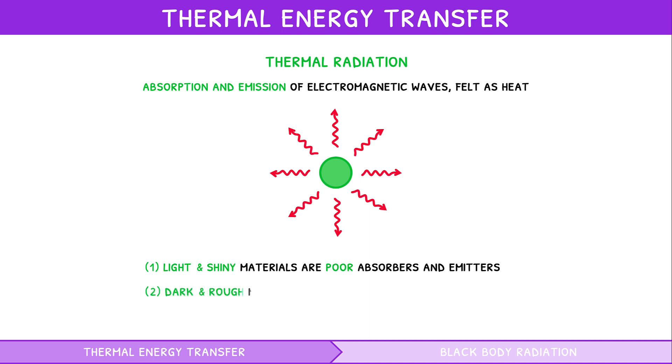Dark and rough materials are excellent absorbers and emitters of thermal radiation, hence why dark shirts or cars do get very hot in summer. For the IB Physics syllabus, you need to be aware of theoretically perfect radiation, termed black body radiation. Let's explore this now.